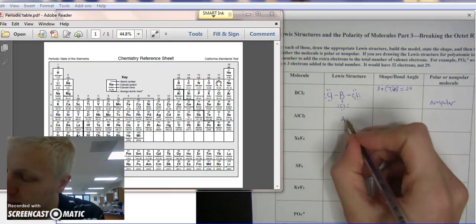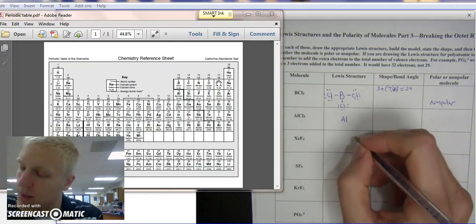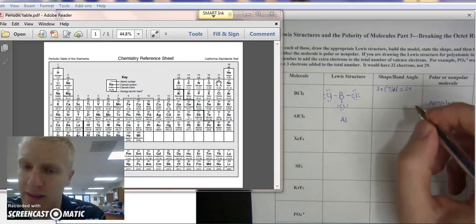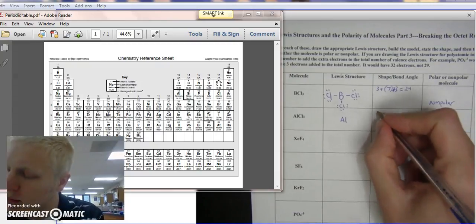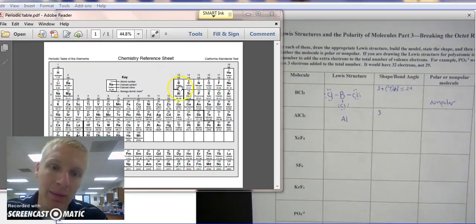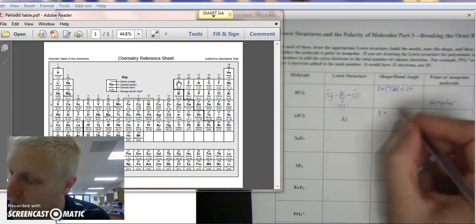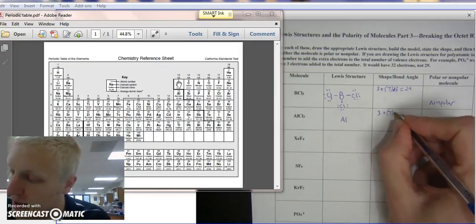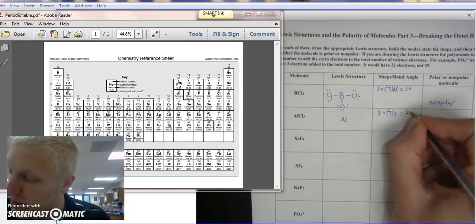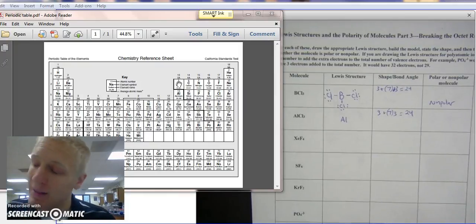Alright, doing AlCl3. Aluminum's in the center because it's in the least supply. Aluminum again has 3. It's in the same column as boron, 3 outer electrons. And chlorine, you know, has 7, it's a halogen. And there's 3 of them. So you add it up, it equals 24.